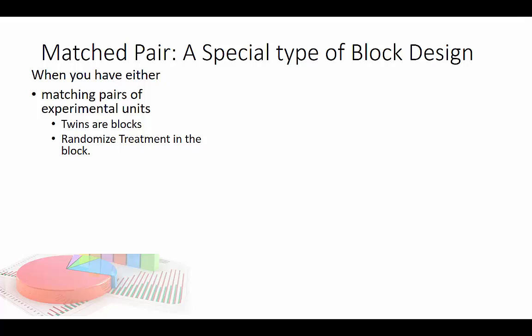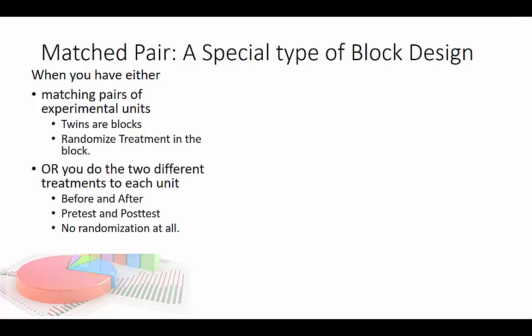One twin gets the treatment and one doesn't. Another type of matched pair design is the before-and-after design, which can look like a pre-test and a post-test. If we think software will help kids learn to multiply better, we give them a multiplication pre-test, give them the training, and then give them a multiplication post-test.